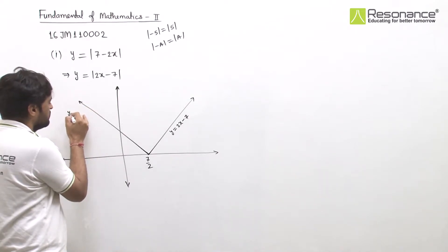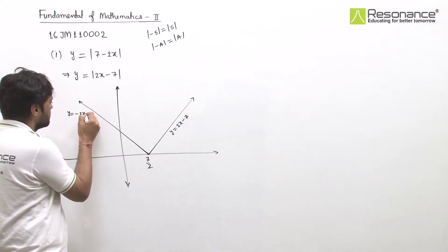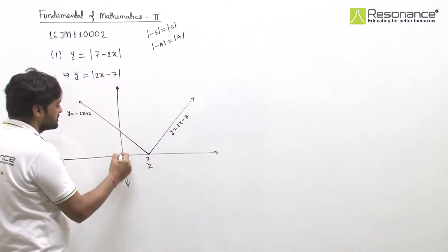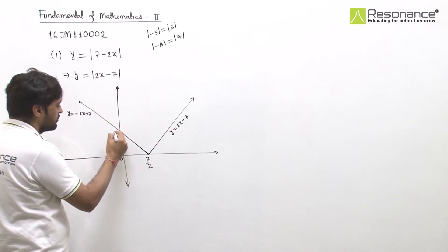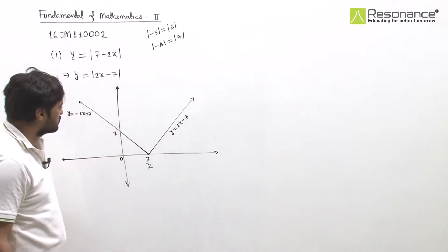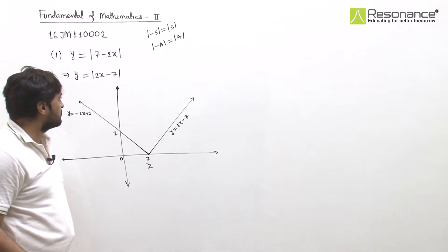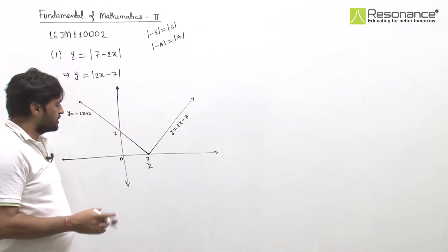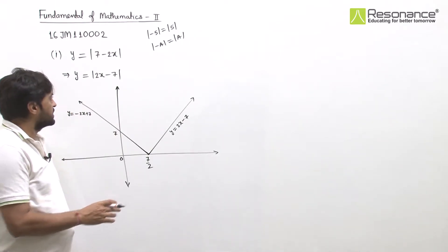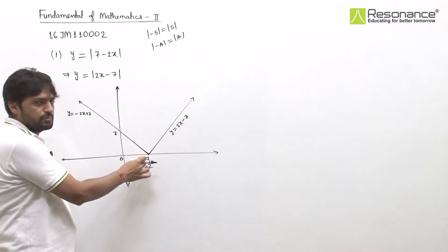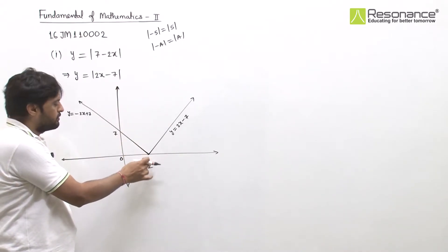So for x less than 7/2, this is y equal to minus 2x plus 7. At x = 0, the value is clearly 7, since mod of minus 7 is 7. So this is the graph of mod of 2x minus 7. The turning point is at 7/2 where the value is 0.